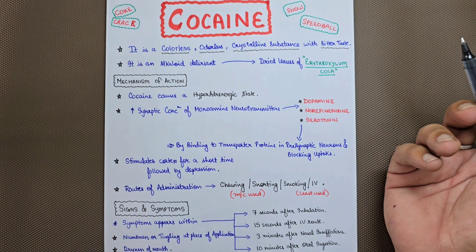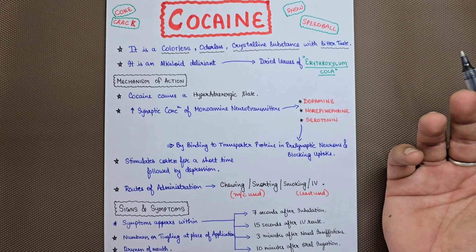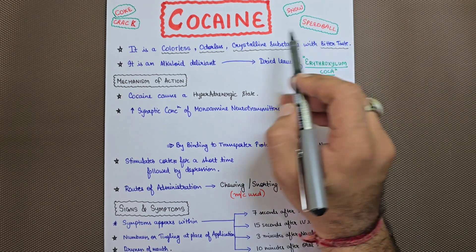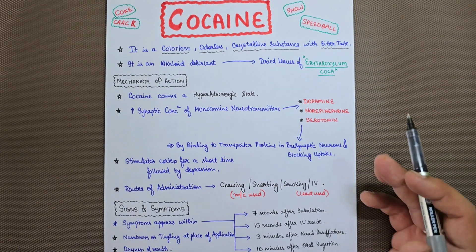Different names have been given to cocaine in different countries, for example: snow, speedball, coke, and crack. These are the different names associated with cocaine.